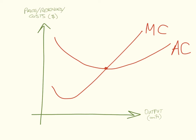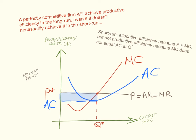In the long run, a perfectly competitive firm will always achieve productive efficiency as well — even if it doesn't achieve it in the short run. Here is a short-run situation where the firm has allocative efficiency because it's producing at a level where price equals marginal cost, but not productive efficiency, because marginal cost does not equal average cost at the profit-maximising level of output Q*. Here the firm is making an abnormal profit, shown as the shaded box in blue.